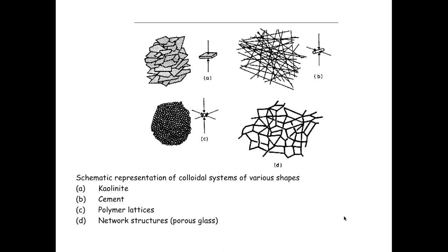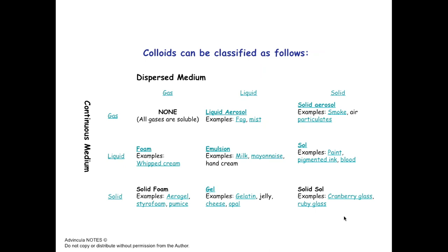Colloids can be classified depending on the continuous and dispersed medium. If the continuous medium is gas, these are aerosols — fog and mist are liquid aerosols, while smoke in air is a solid aerosol. If the continuous medium is liquid and the dispersed phase is gas, that's foam or cream. Liquid-liquid continuous and dispersed phases give emulsions like milk or mayonnaise. Solid dispersed in a liquid continuous medium gives paints and ink. Various solid-gas-liquid-solid type classifications also exist.